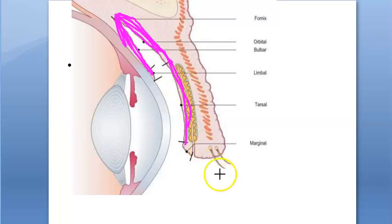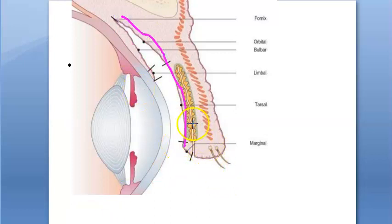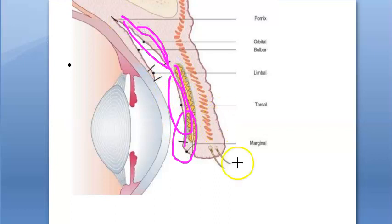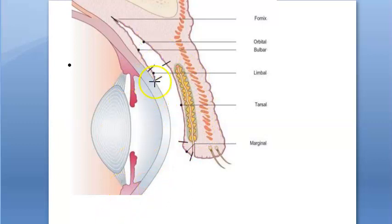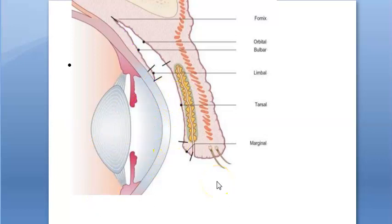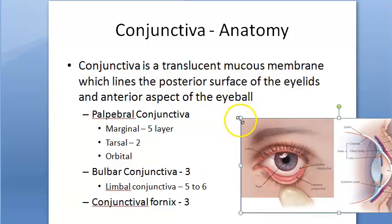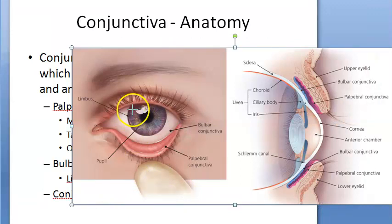The palpebral conjunctiva has three parts: the marginal part, the tarsal part, and the orbital part. The marginal part is continuous with the skin, the tarsal part is above the tarsal glands, and then you have the orbital part. Coming to the bulbar conjunctiva, you have the limbal conjunctiva, which is around the limbus of the cornea — specifically, three millimeters of conjunctiva around the limbus is called the limbal conjunctiva.